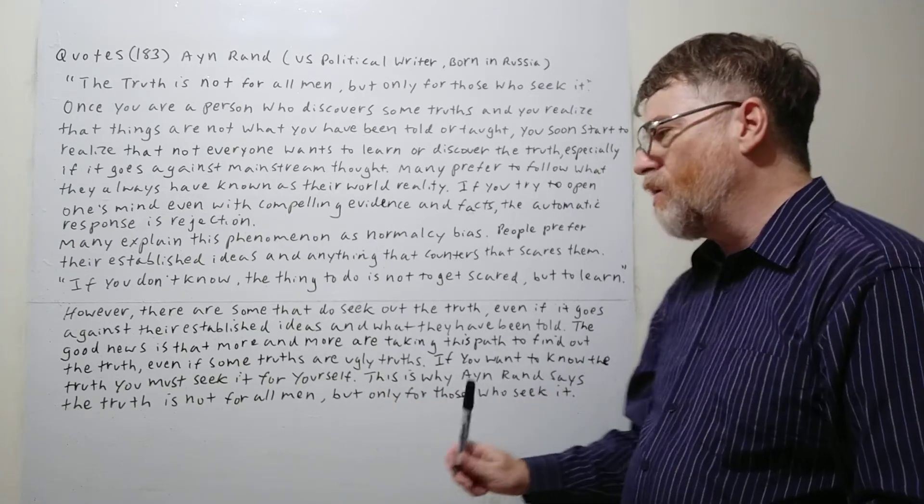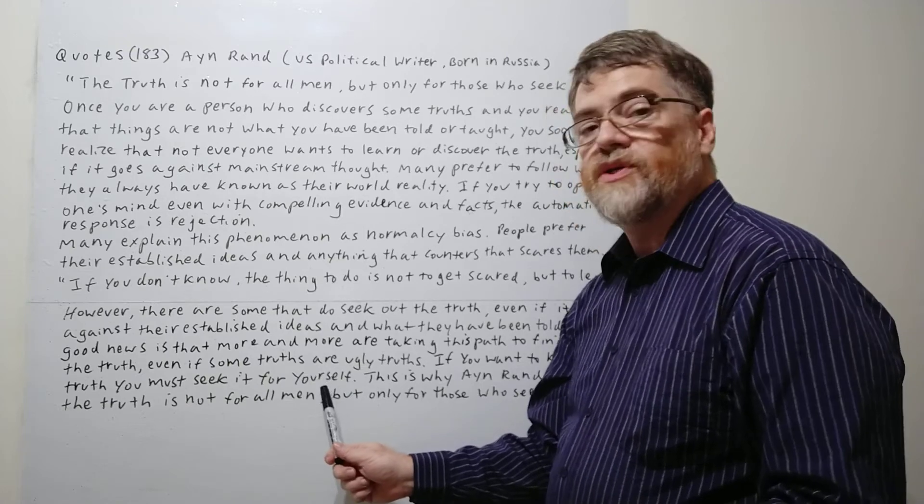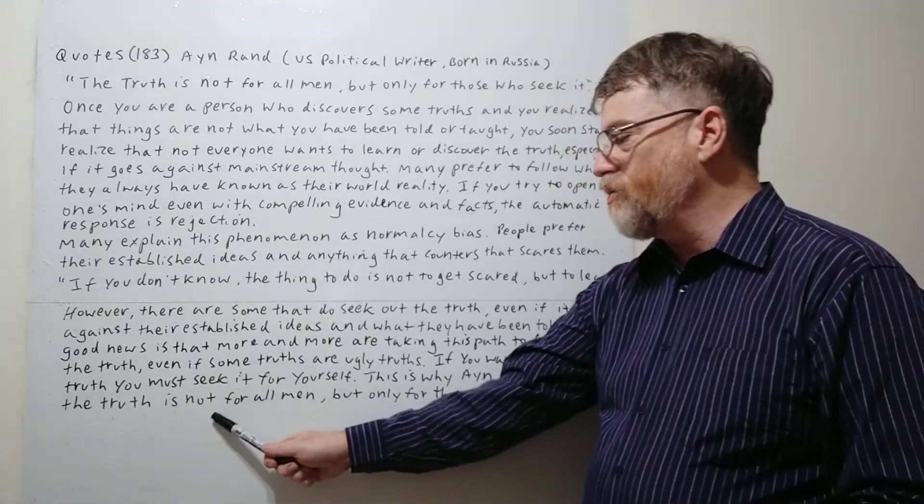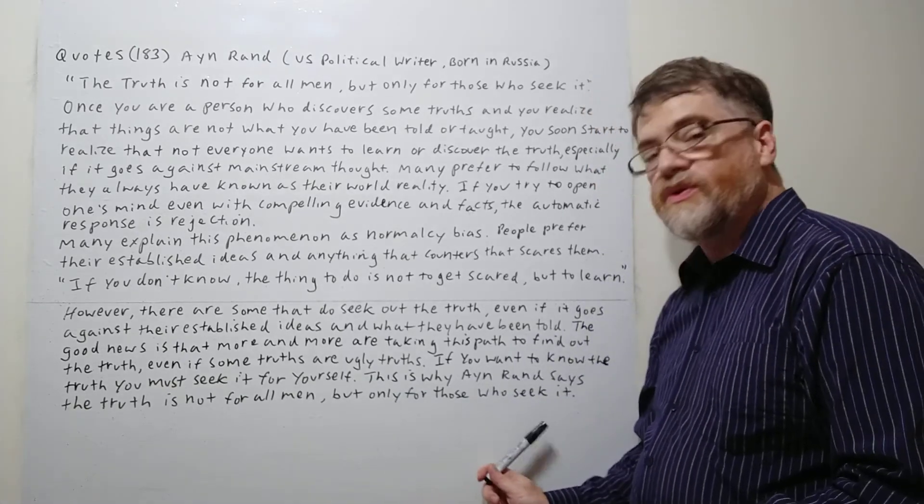If you want to know the truth you must seek it for yourself. This is why Ayn Rand says the truth is not for all men but only for those who seek it.